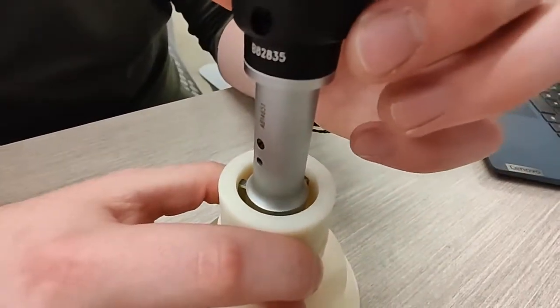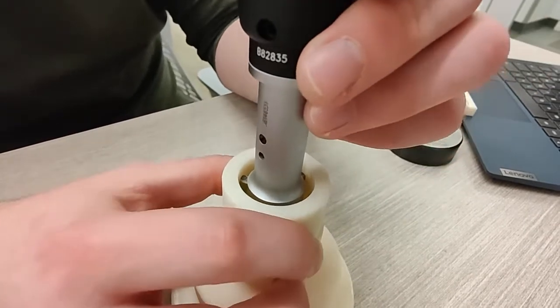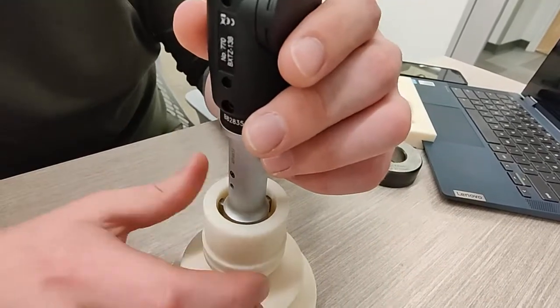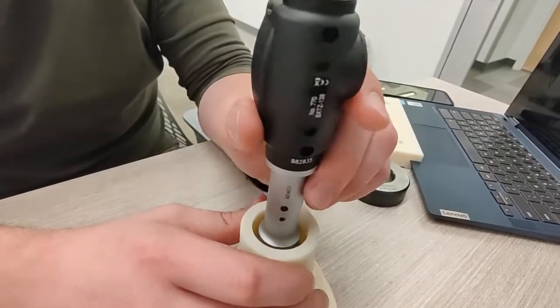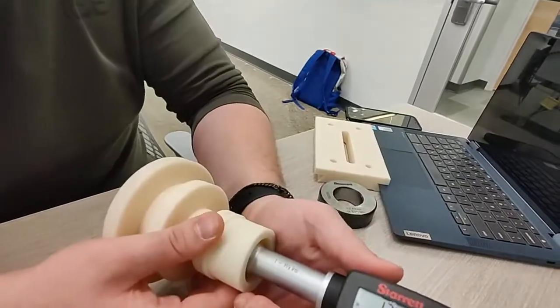Then we're going to wiggle the micrometer to make sure that nothing is slipping, so that we know that all the anvils are sitting flush and flat against the internal bore. Since the ratchet has clicked, we know that we're all good.